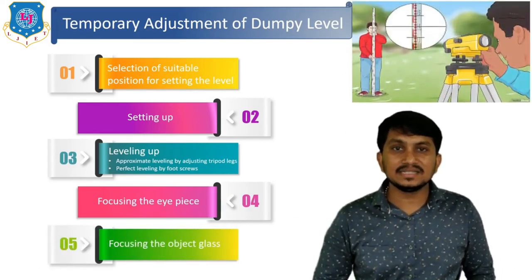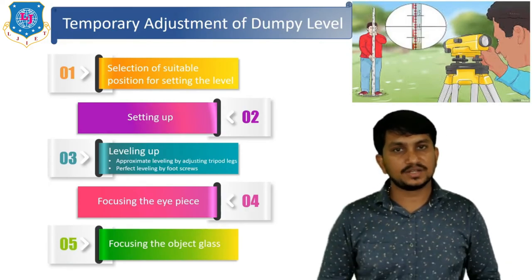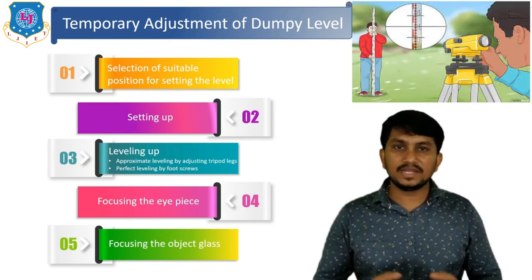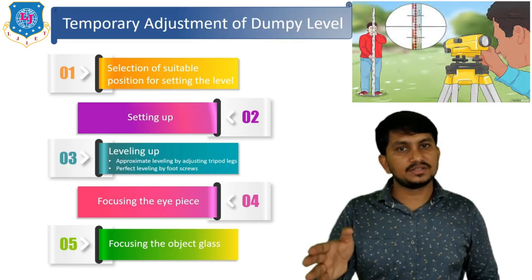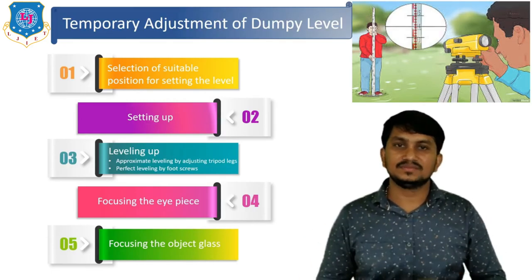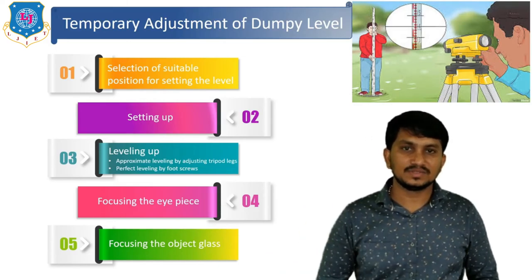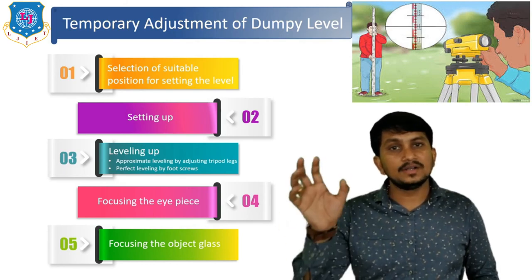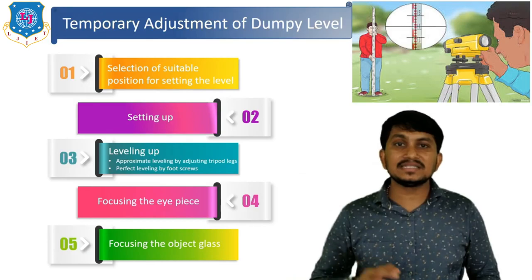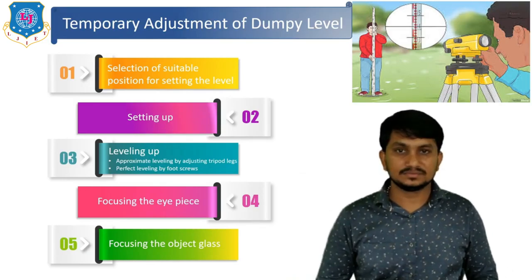The last step of temporary adjustment is focusing of the object. This is done using the focusing screw to bring the image of the object exactly into the plane of the crosshair. These are the five steps of temporary adjustment of the dumpy level, after which we can take our first staff reading.